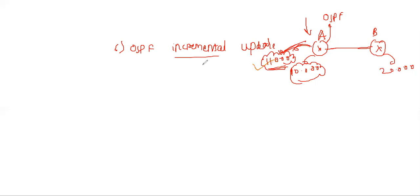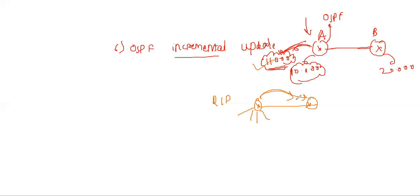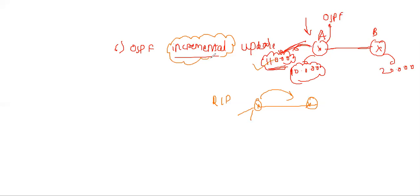In contrast, RIP sends all its routing updates to neighbor routers every 30 seconds, even if there are no changes — that's a big disadvantage. But OSPF will share only incremental updates — whatever updates have increased, only those will be shared with neighbors.